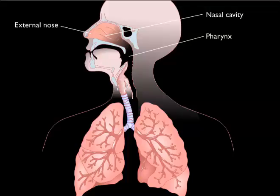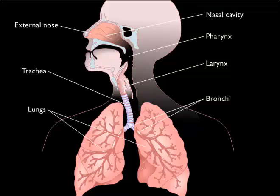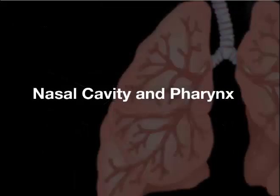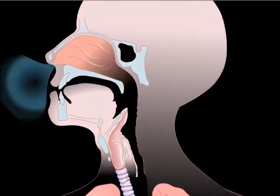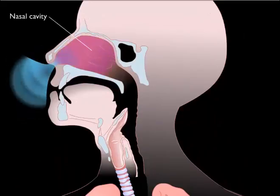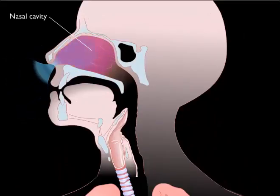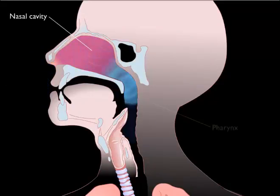The lower respiratory tract includes the larynx, trachea, bronchi, and lungs. Inhaled air enters the nasal cavity, where it is cleaned, warmed, and humidified on its way through the pharynx, a shared region of the respiratory and digestive systems.